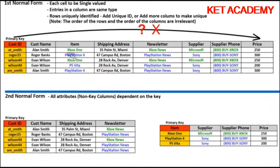So I take the customer ID, the name, the shipping address, and the subscription into one table, and then the item - which becomes the primary key in the other table - along with the supplier, supplier phone number, and price goes into another table. I'm only going to list each item one time. Now the price, supplier, and supplier phone all depend on the item - Xbox One is supplied by Microsoft, this is their phone number, and this is the price. And the customer ID determines the name, shipping address, and subscription. This person is subscribed to two newsletters so he appears in the customer table twice. The only problem is we lost the transactions - we don't know who bought what.